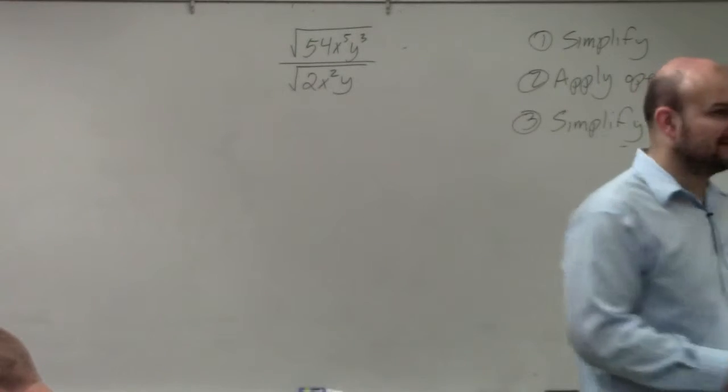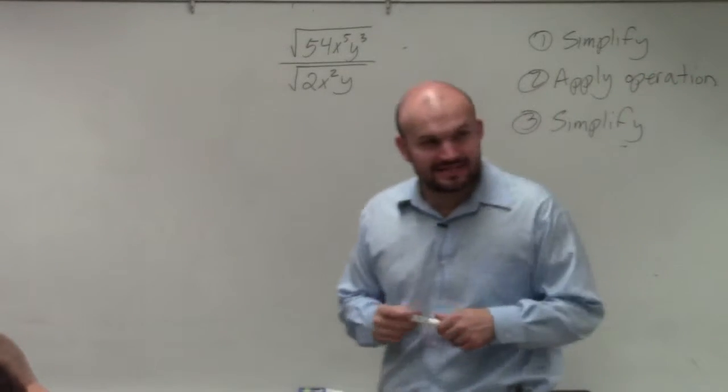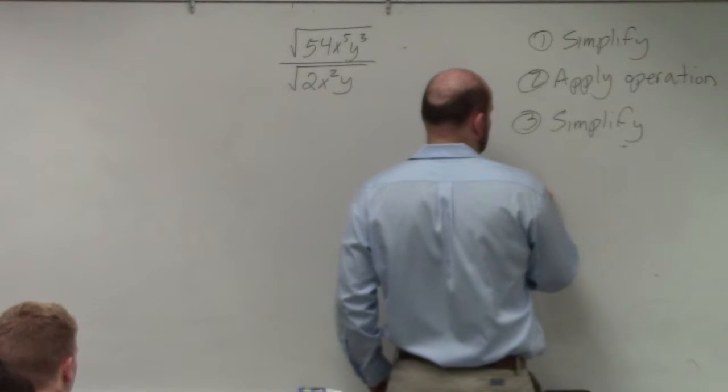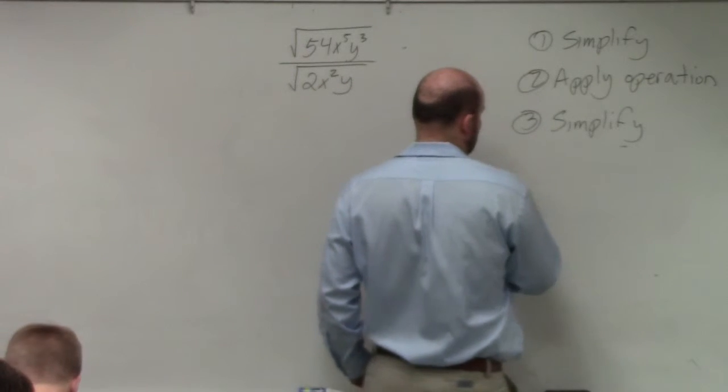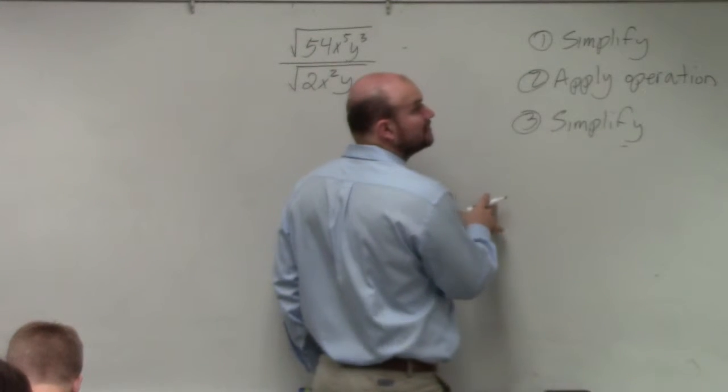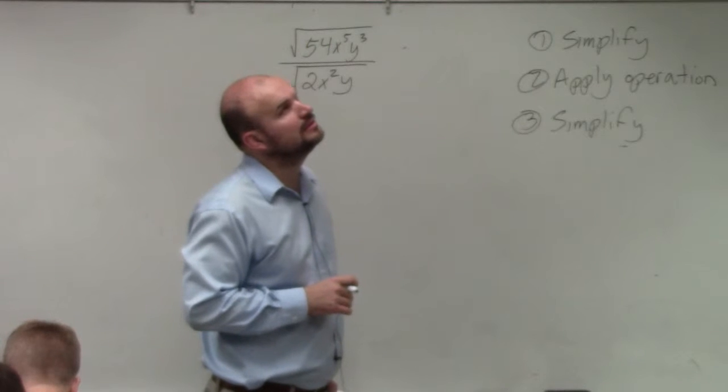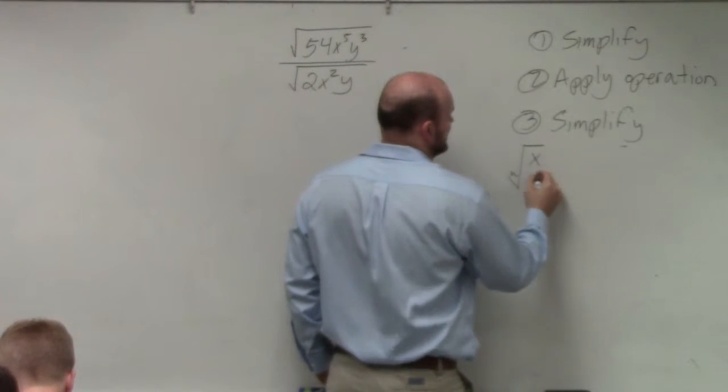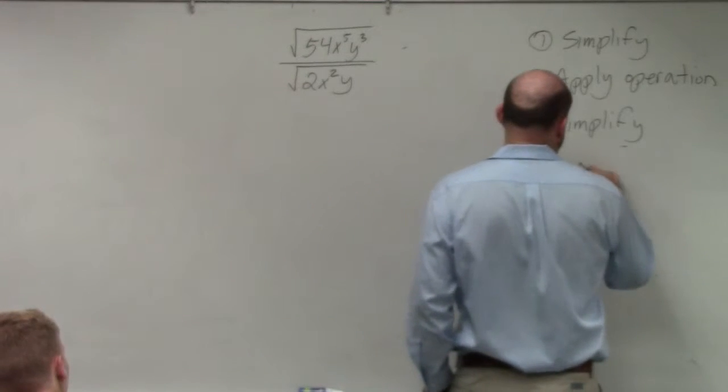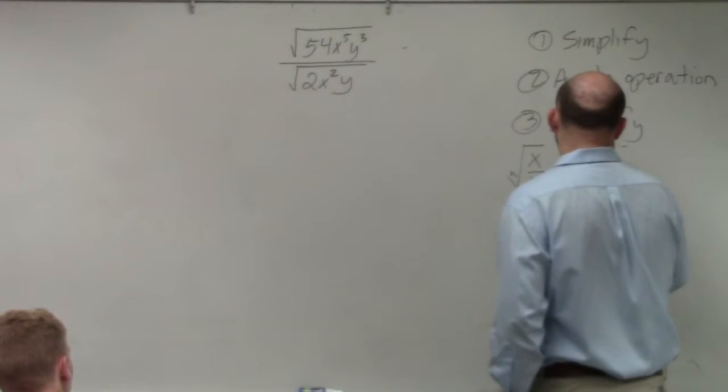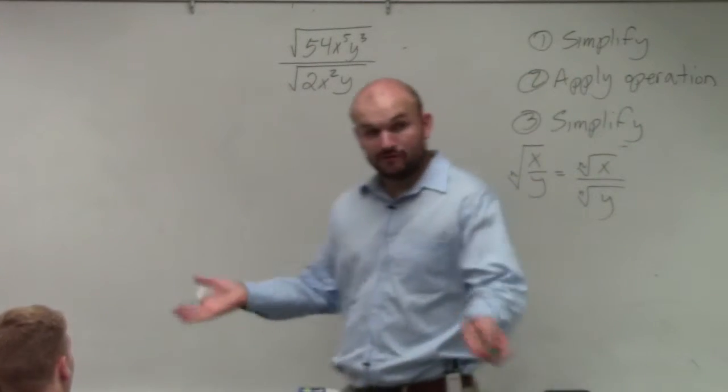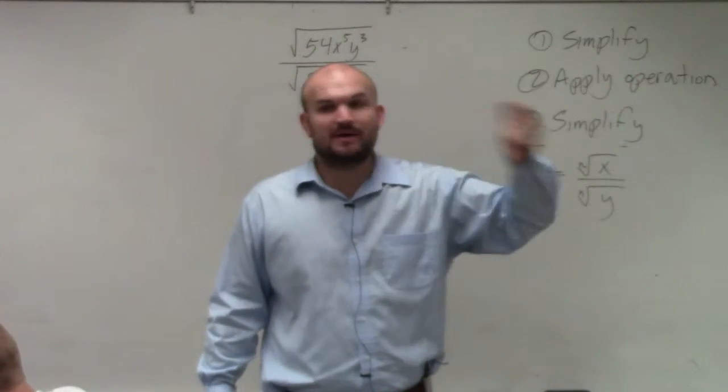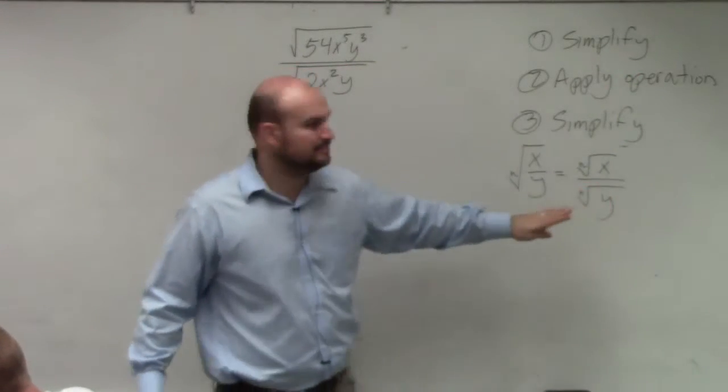So the other rule of radicals that we went over last class period was the quotient rule of radicals. If you guys remember, the quotient rule of radicals basically stated that if you had the nth root of x over y, you can break that up into the nth root of x over the nth root of y. So if you have the root of a fraction, you can basically just do the root of the numerator divided by the root of the denominator.